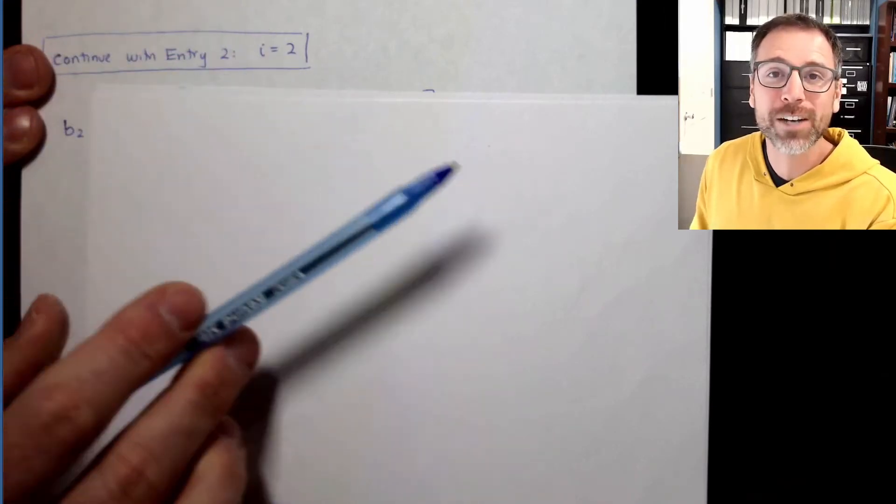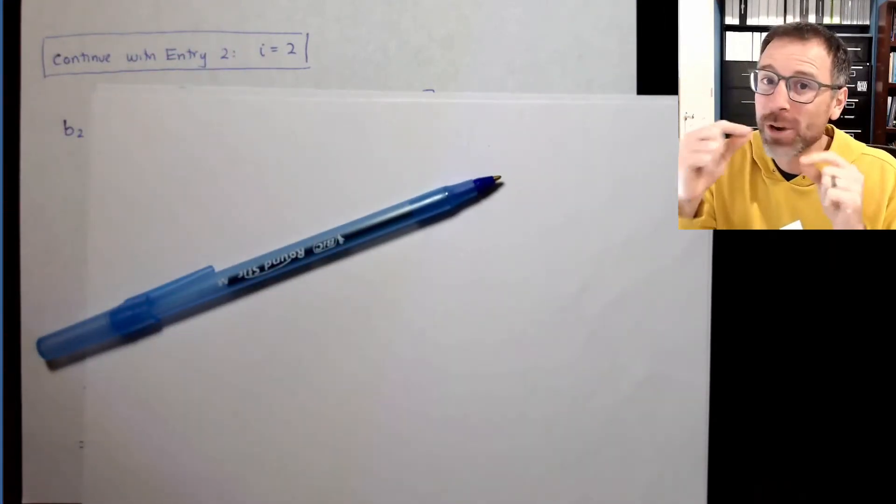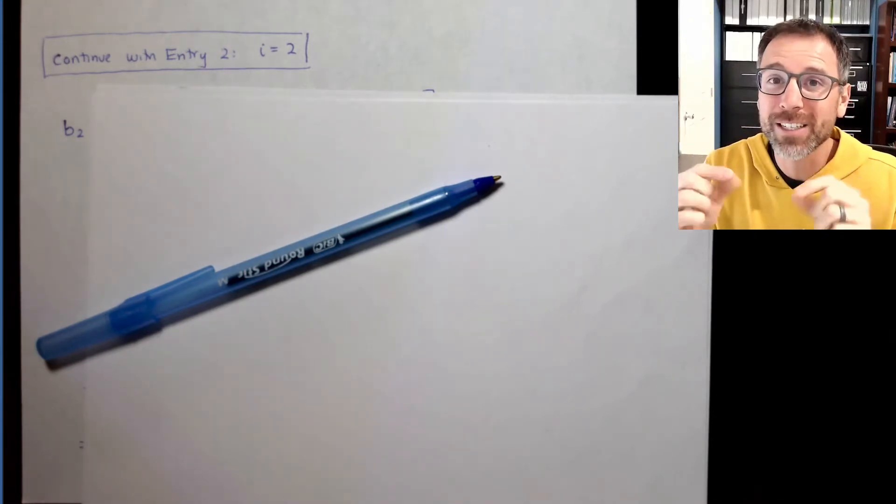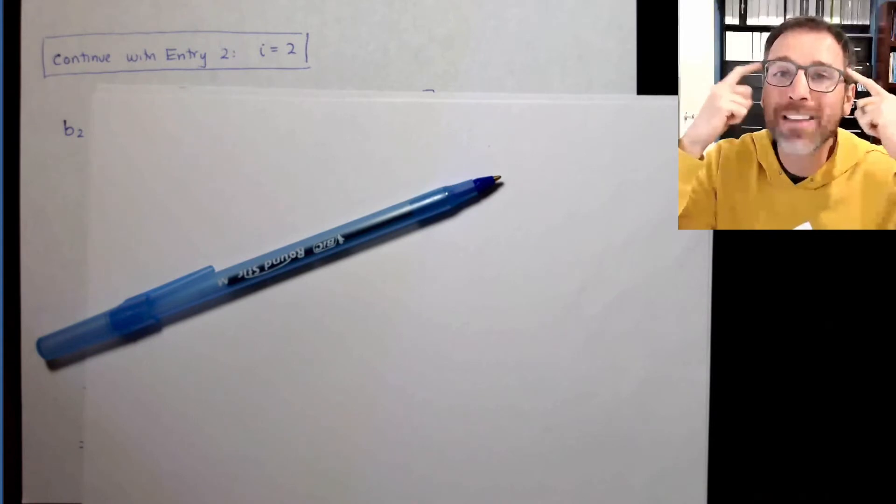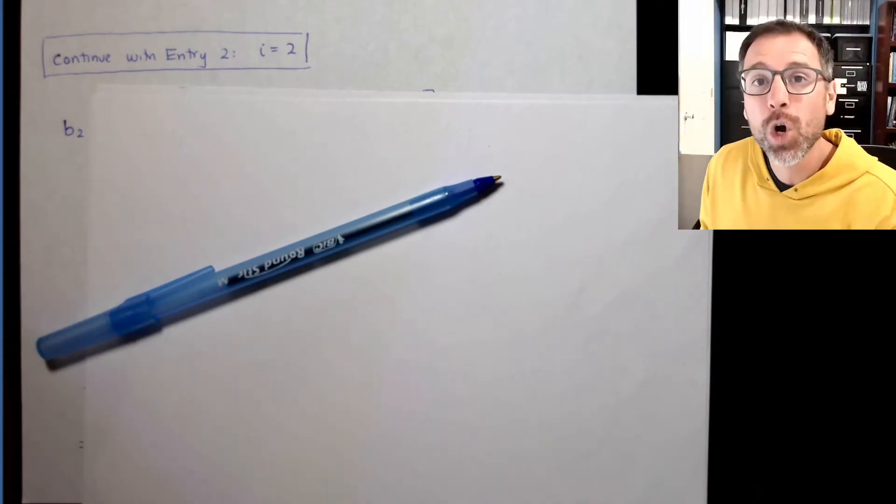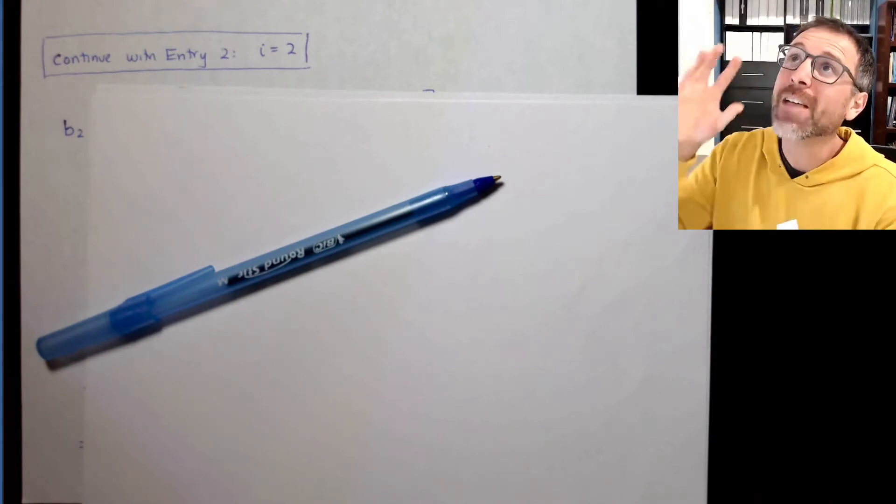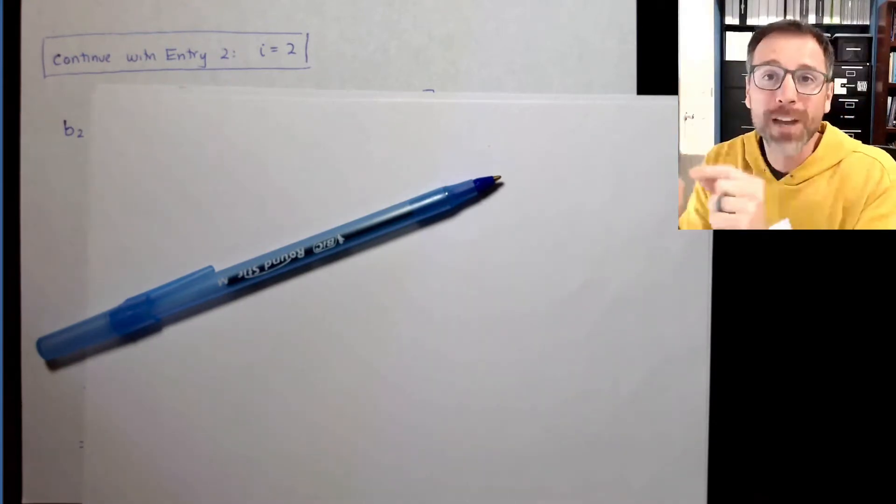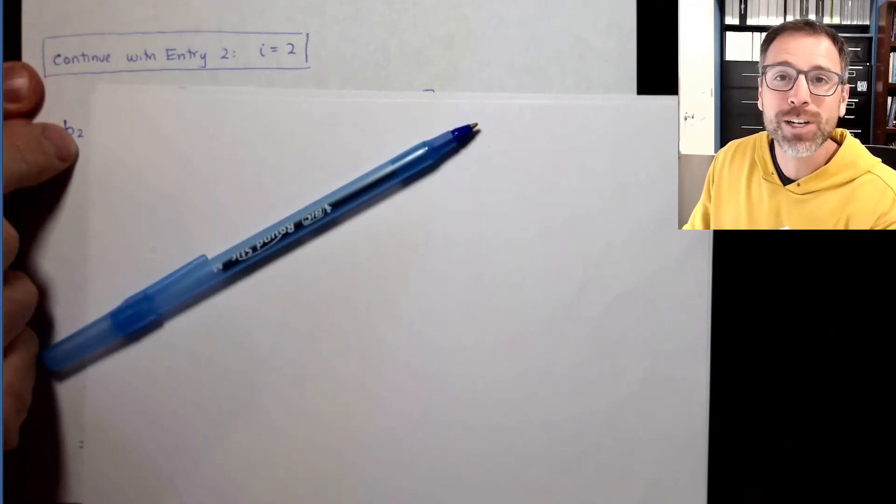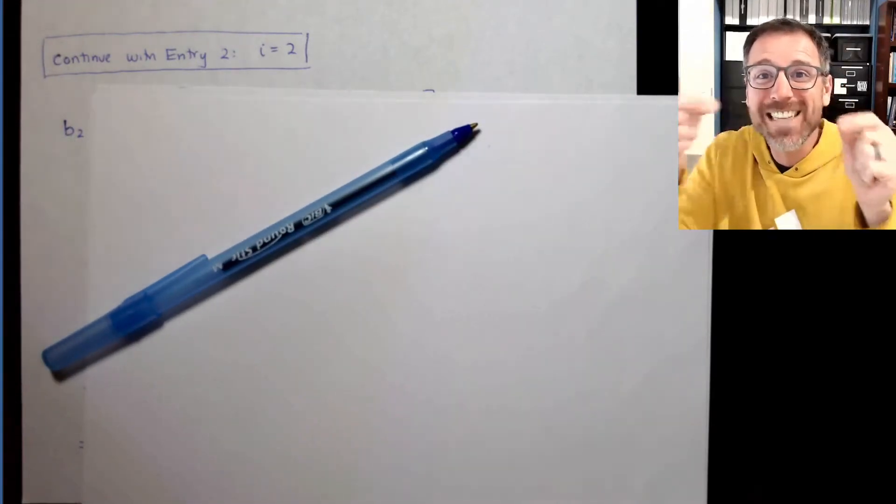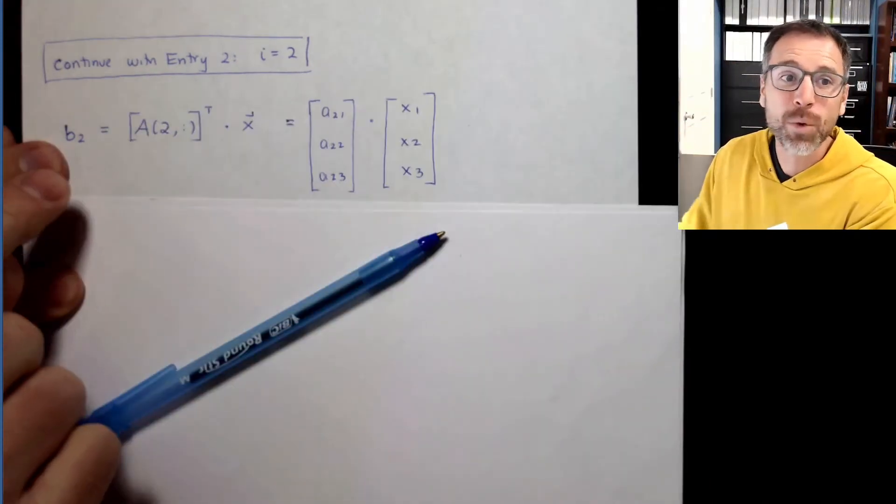Let's do exactly that with our second entry. Now we're going to move down to the second entry of B. Let me test my memory. This is an active recall process. The point of the example is not to get an answer, but to strengthen the neural network in my brain that encodes this particular definition. To get the second entry of B, I'm going to take the second row, transpose it, and then dot it with the vector X.